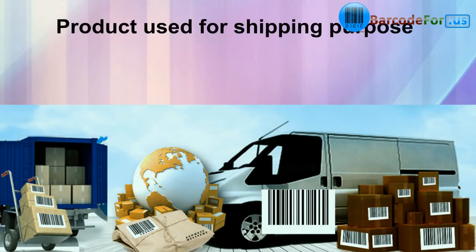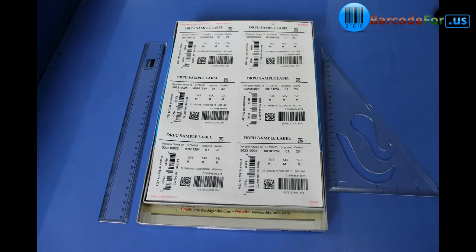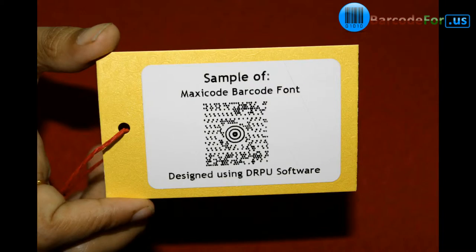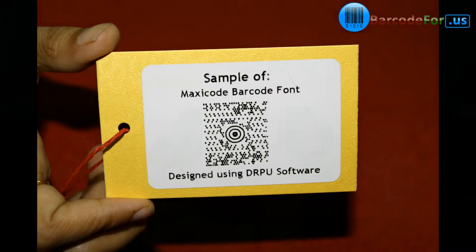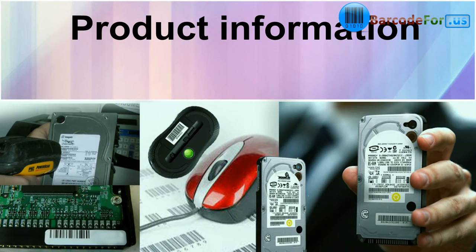If your product is used for shipping purposes, then you require a large barcode label sheet with multiple barcodes at the same time for tracing information across different departments. We have also given an example here.